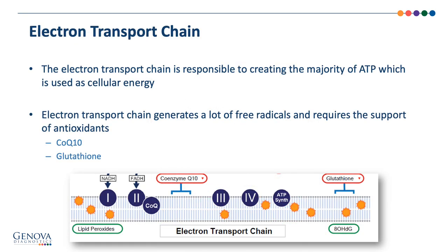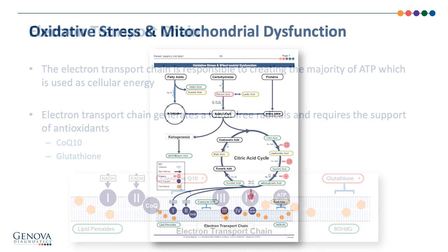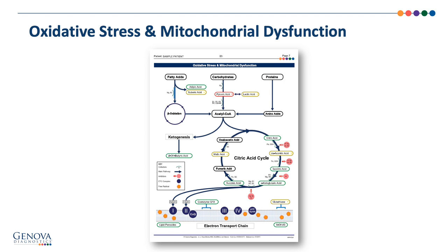From the citric acid cycle, we have the electron transport chain, which is responsible for creating the majority of ATP used as cellular energy. The electron transport chain generates a lot of free radicals and requires antioxidant support, such as CoQ10 and glutathione. Also listed are lipid peroxides and 8-OH-DG, which are signs of oxidative damage. Overall, many abnormal values in the top half of the Krebs cycle page suggest nutritional needs underpinning mitochondrial dysfunction, while abnormals around the electron transport chain may indicate increased oxidative stress and needs for antioxidants.